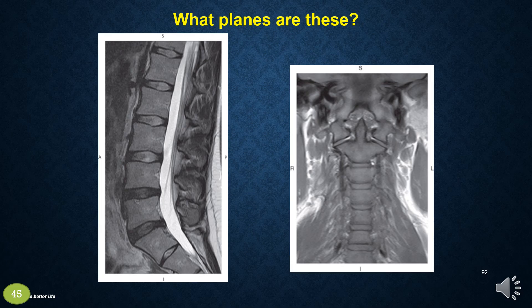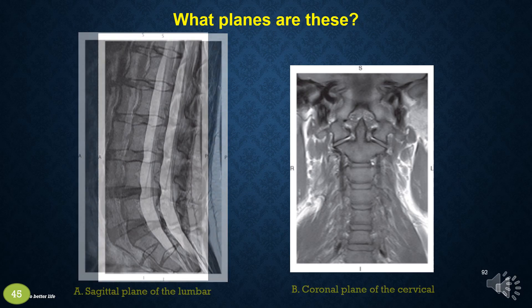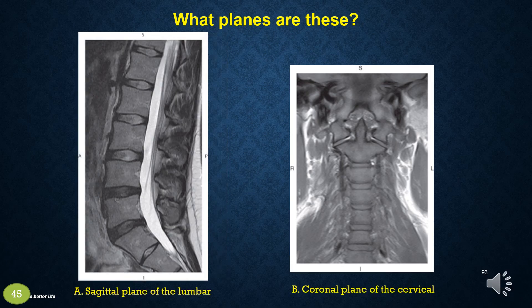What planes are these? A is the sagittal plane of the lumbar. B is the coronal plane of the cervical.